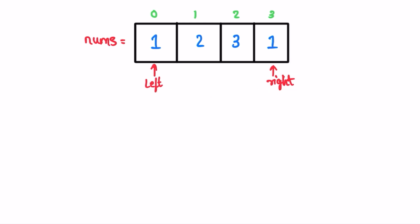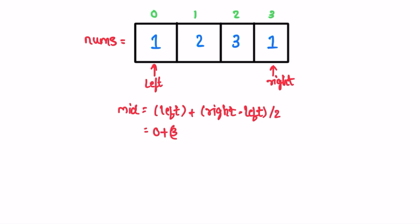Inside the while loop, we find the mid element using the formula: left + (right - left) / 2. With left at 0 and right at 3, mid = (3 - 0) / 2 = 1.5, which gives us 1. We then check if the element at mid is less than the element at mid + 1. Since 2 < 3, we shift left to mid + 1.